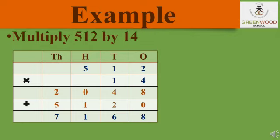Step 2 is the number 512 gets multiplied by 1, that is in 10's place. For that answer we will write below 2048, and in the 1's place we will put 0. Now we will start multiplying: 1 two's are 2, which comes in 10's place; 1 one's are 1, which comes in 100's place; and 1 five's are 5, which comes in 1000's place. Step 3 is to add both the products.